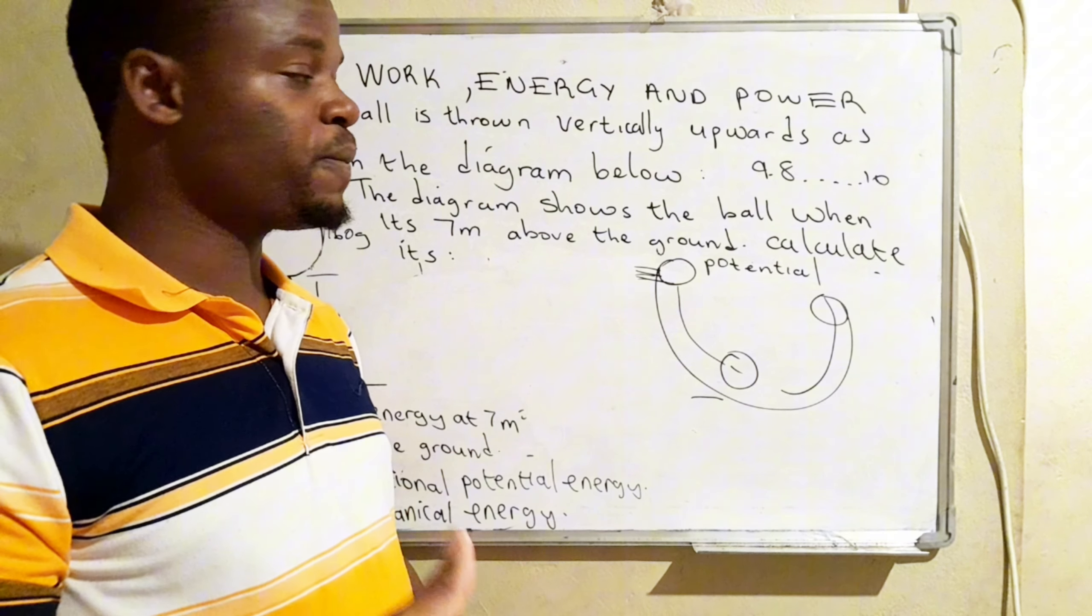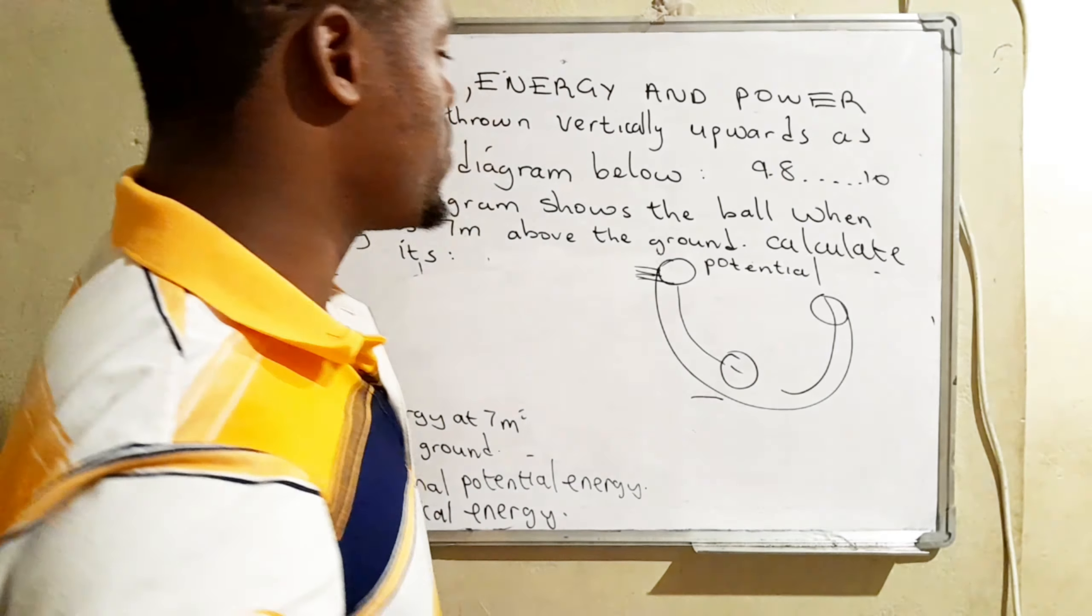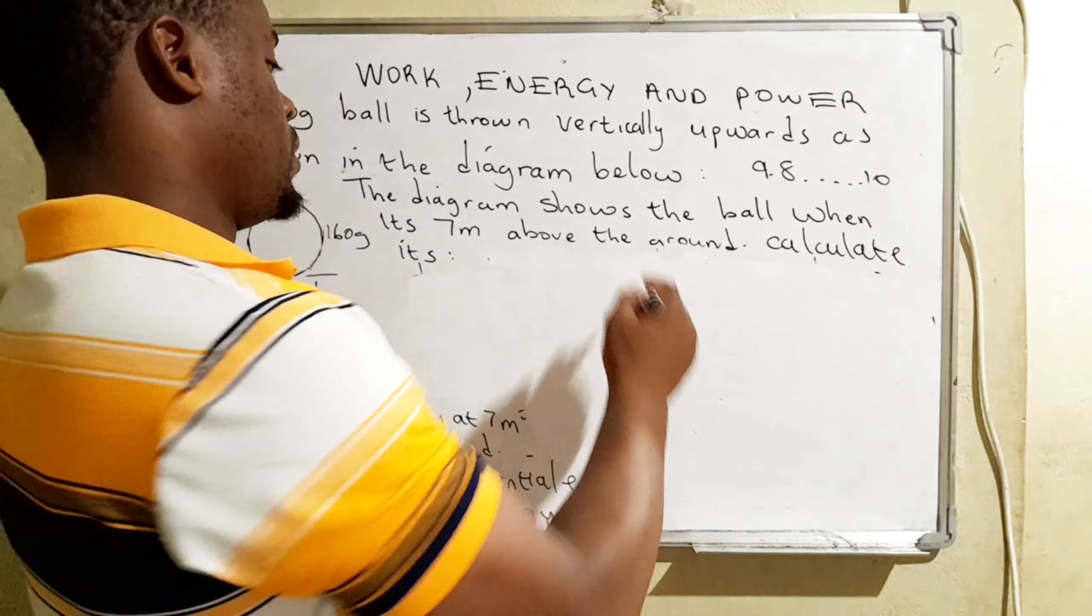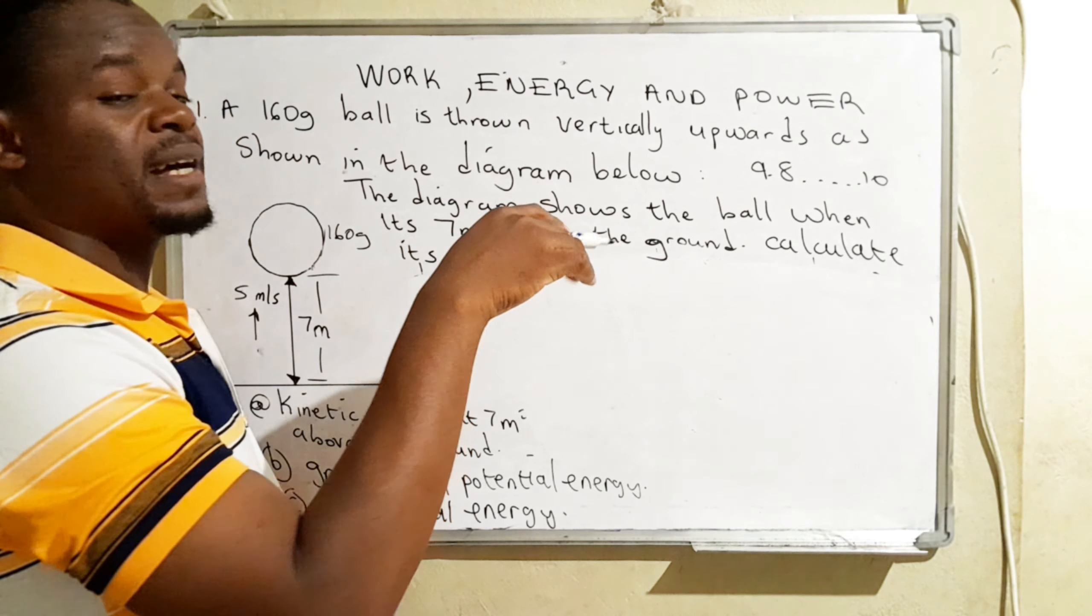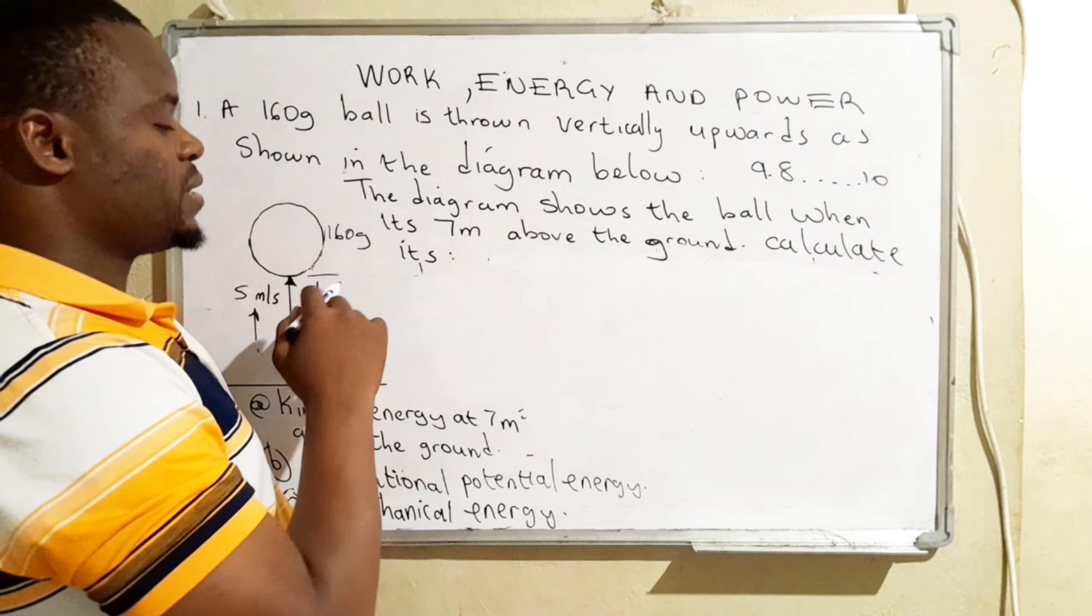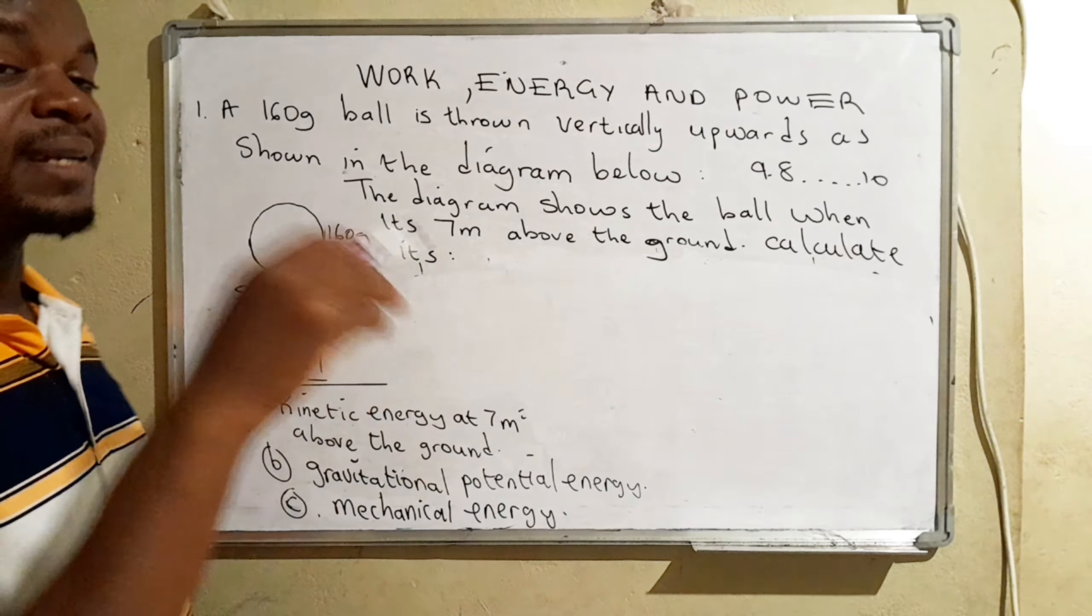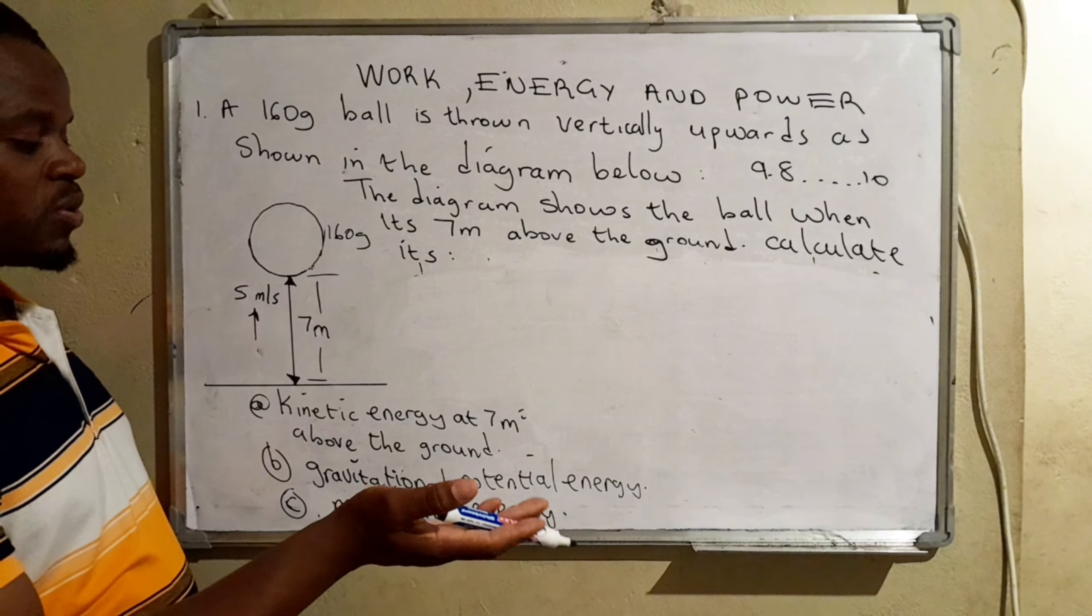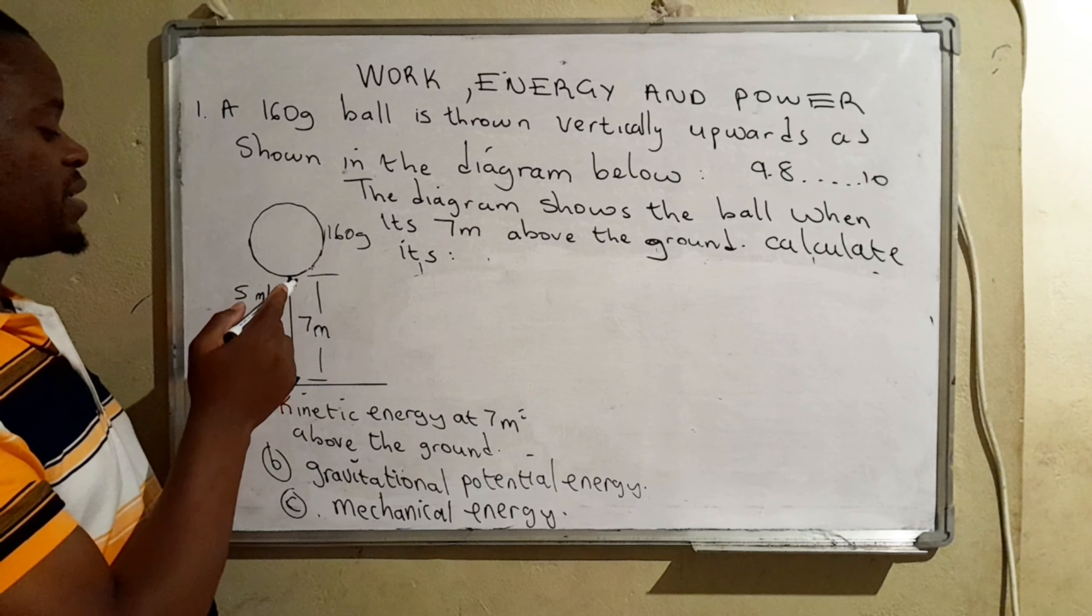Gravitational potential energy, kinetic energy, and mechanical energy. So now let's look at this problem that we have here. The problem reads: a 160 gram ball is thrown vertically upwards as shown in the diagram below. The diagram shows the ball when it's seven meters above the ground. Calculate its kinetic energy at seven meters. So it was thrown from below, and it went up. The moment it reached here, obviously, it stopped moving.